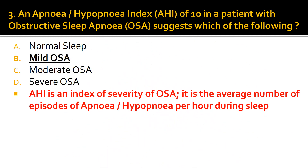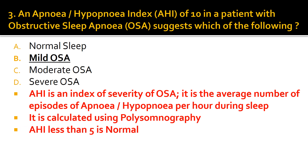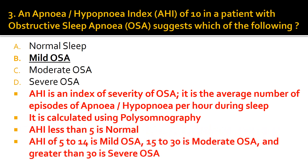AHI is an index of the severity of obstructive sleep apnea. It is the average number of episodes of apnea or hypopnea per hour during sleep, calculated using polysomnography. A score of less than 5 is normal, AHI of 5 to 14 is mild OSA, 15 to 30 is moderate OSA, and a score greater than 30 is severe obstructive sleep apnea.